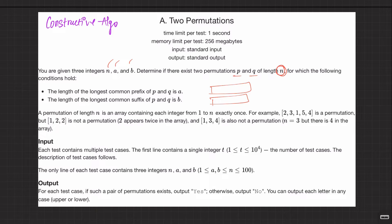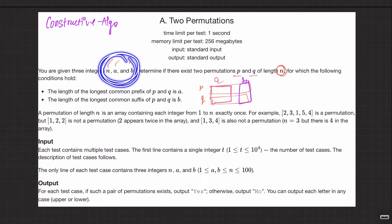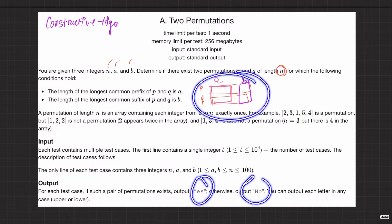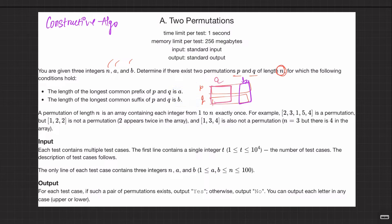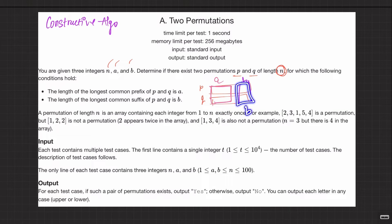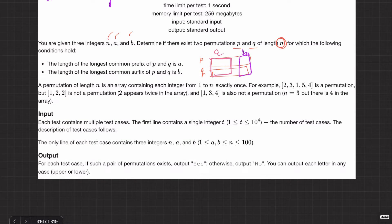The longest common prefix of p and q should have length a, and the longest common suffix of p and q should have length b. So given three integers n, a, and b, we just say yes or no — whether it's possible to create these two permutations. They are not asking for the actual permutations, just whether it is possible.